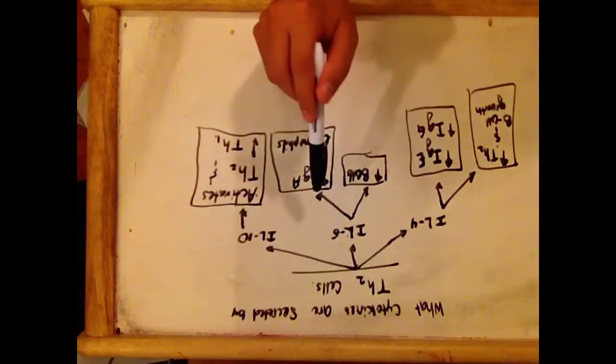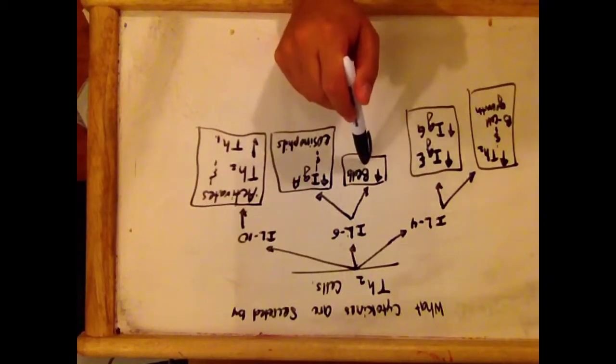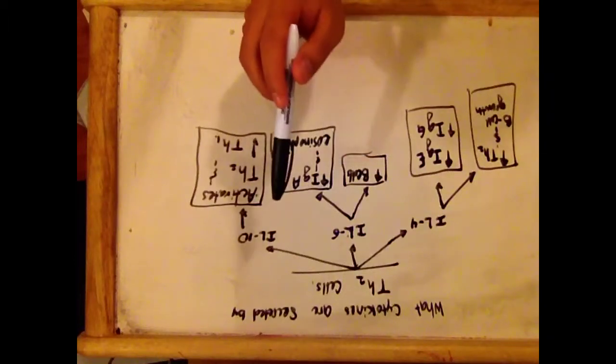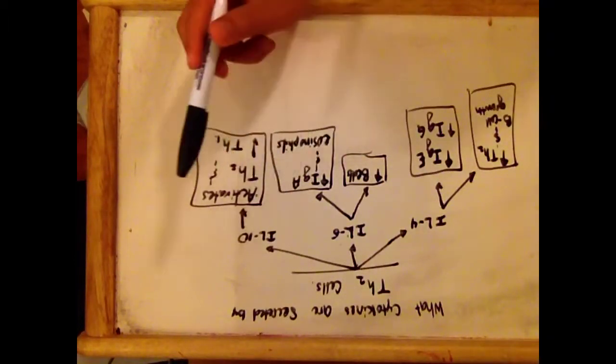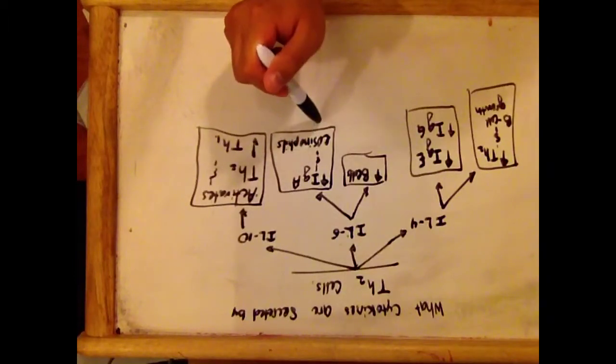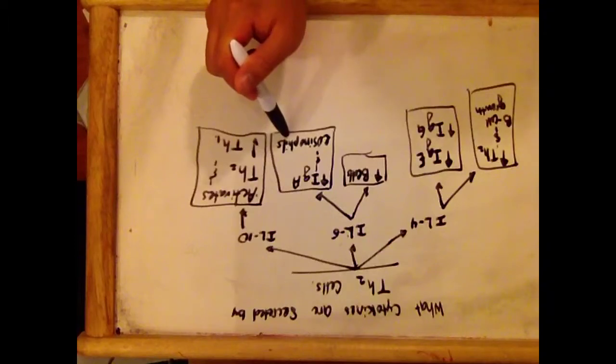IL-5 also promotes the differentiation of B cells but it enhances the class switching of IgA and it also stimulates the growth and differentiation of eosinophils.